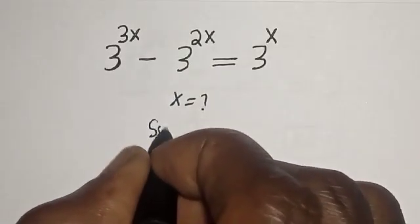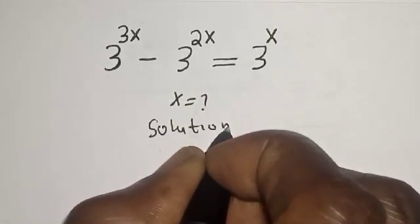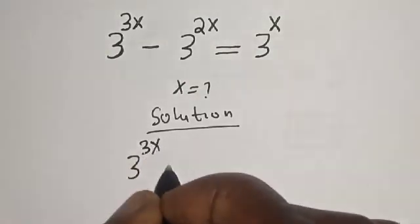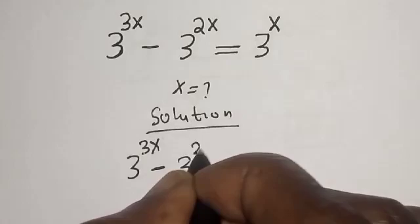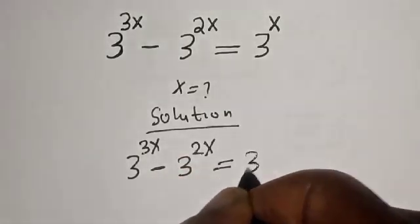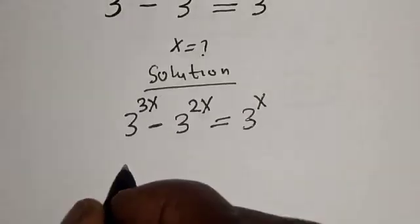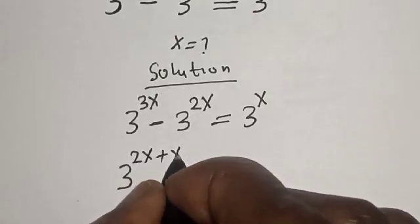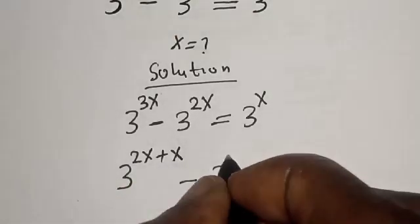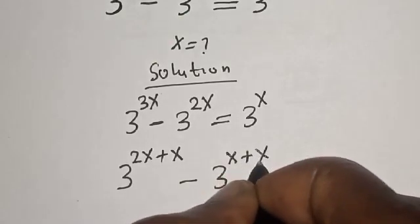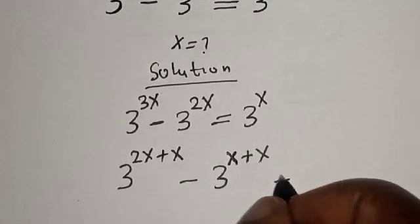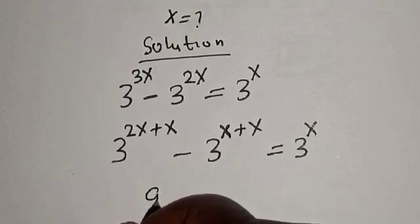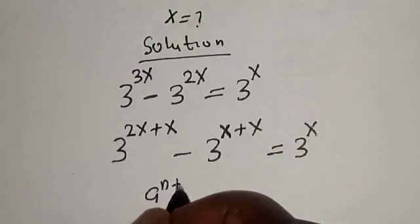Solution: 3 raised to power 3x minus 3 raised to power 2x is equal to 3 raised to power x. We can rewrite this as 3 raised to power 2x plus x minus 3 raised to power x plus x is equal to 3 raised to power x. Now remember this rule that l raised to power n plus m is equal to l raised to power n multiplied by l raised to power m.